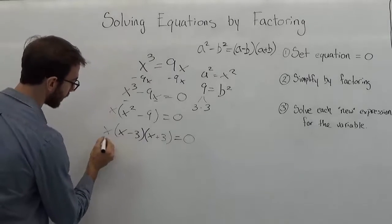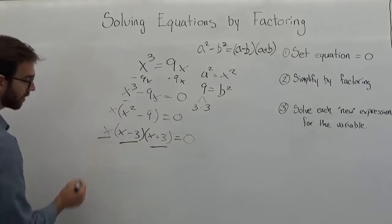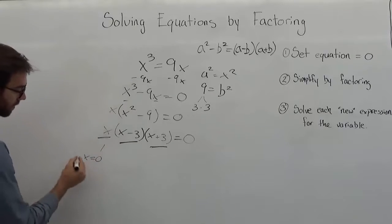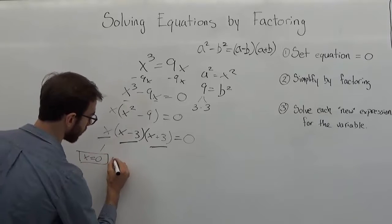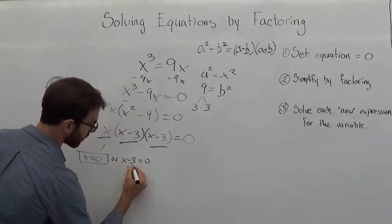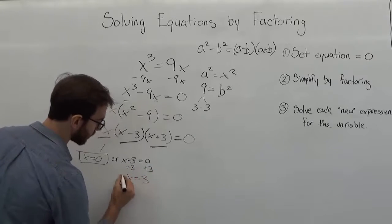And now we're just simply solving each one of these for the missing variable. So we've got an x is equal to 0. Nothing to do there. Or that x minus 3 equals 0. And add a 3 to both sides. Then x is equal to 3.